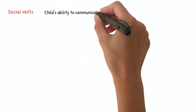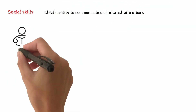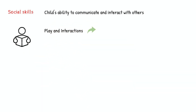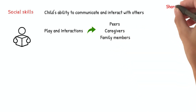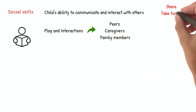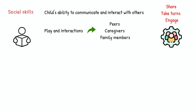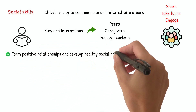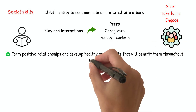Social skills refer to a child's ability to communicate and interact with others. Children learn social skills through play and interactions with their peers, caregivers, and family members. They learn how to share, take turns, and engage in cooperative play. These skills help children form positive relationships and develop healthy social habits that will benefit them throughout their lives.